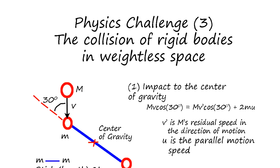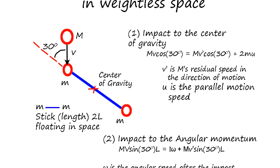Physics challenge question 3: the collision of rigid bodies in weightless space. Suppose we have a stick, weightless but with mass on both ends M and M. The stick is floating in the air and mass M comes and hits one side with speed V.